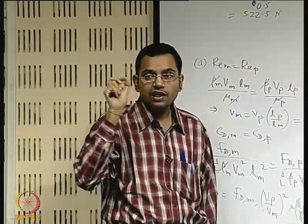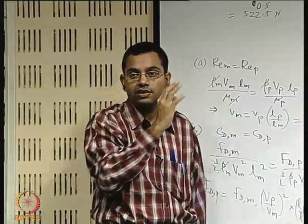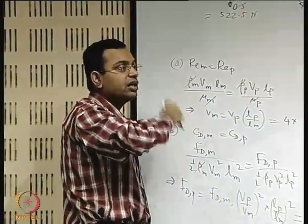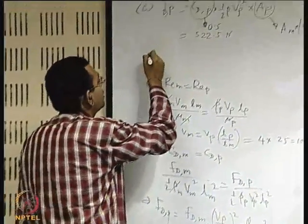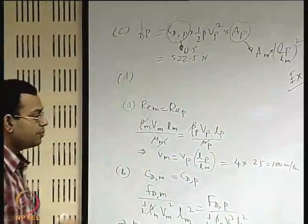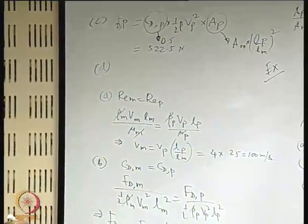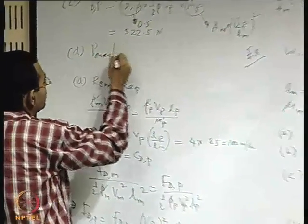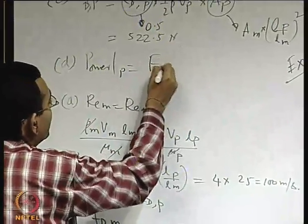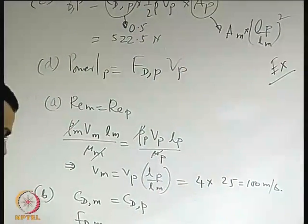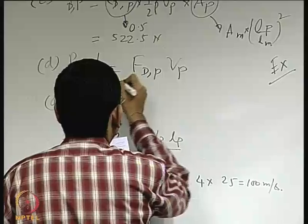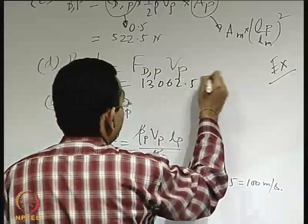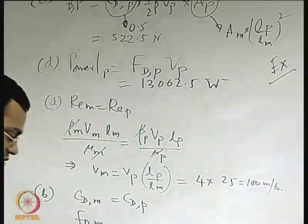These are critical nuances of similarity — you do not blindly apply similarity but consider the context. The fourth part is straightforward: power required to overcome drag equals force times velocity, giving 13,062.5 W.